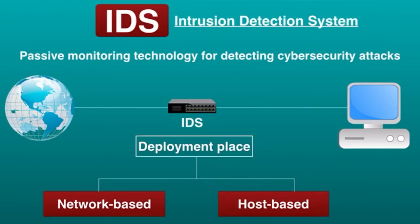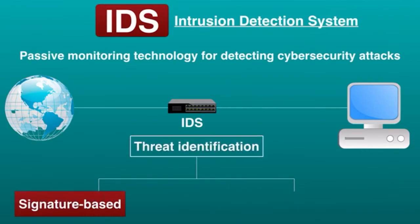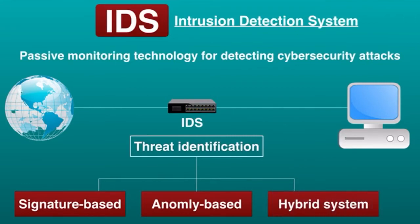No matter what type of IDS you choose, the underlying function is similar: you use passive technology to detect an intrusion, and when something is found suspicious, you get an alert. IDS can also be categorized based on how they identify potential threats. Signature-based IDS uses a library of signatures of known threats to identify them — it is similar to antivirus software. Anomaly-based IDS builds a model of normal behavior of the protected system and reports on any suspicious activity.